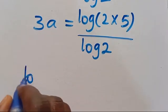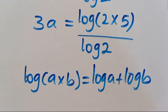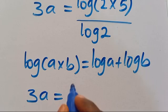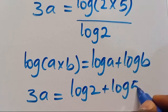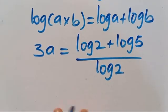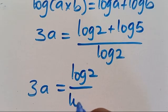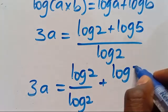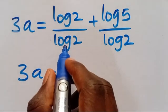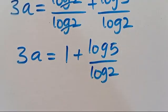Recall that when we have log(a times b), this equals log a plus log b. So we apply that here: 3a equals log 2 plus log 5, all divided by log 2. Distributing log 2 in the denominator, we have 3a equals log 2 divided by log 2, plus log 5 divided by log 2, which simplifies to 3a equals 1 plus log 5 divided by log 2.